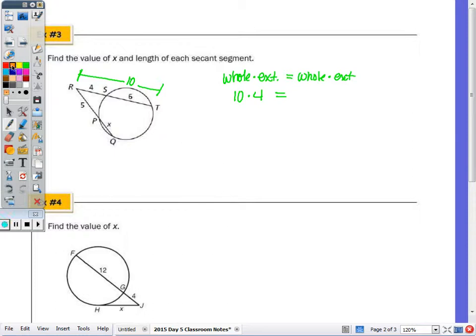and the other secant segment, now the whole here, if part of it's x, is going to be x plus 5. And then the external piece being 5. So whole x plus 5 times 5. So I need to distribute here. We've got 40 equal to 5x plus 25. Subtract 25 from 40, you get 15. Divide by 5, and x is 3.